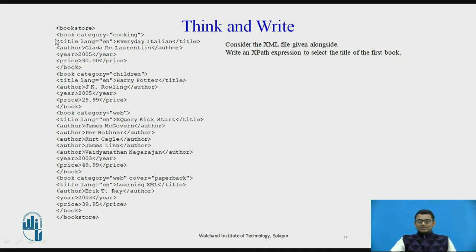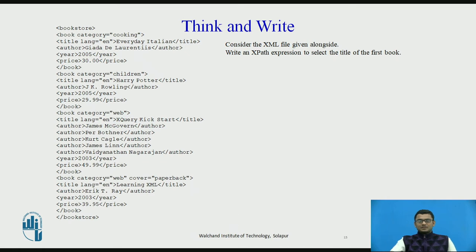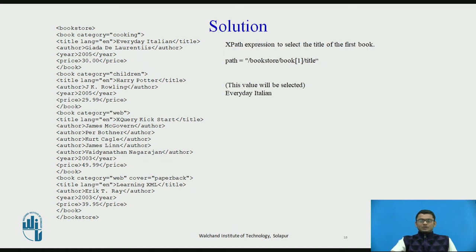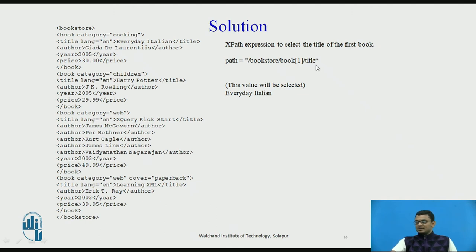Go through this complete XML document shown on the left and write an XPath expression to select the title of the first book. Pause the video and write the correct XPath expression. The answer is: /bookstore/book[1]/title — this returns the title of the first book, which is 'Everyday Italian'.